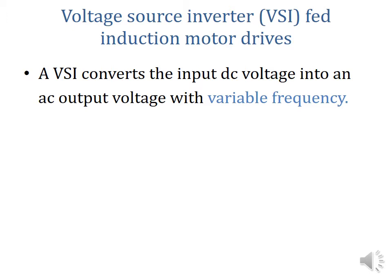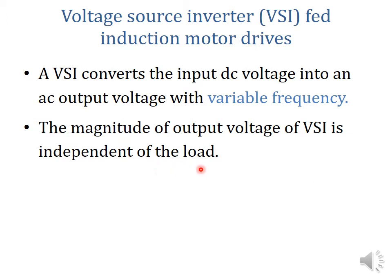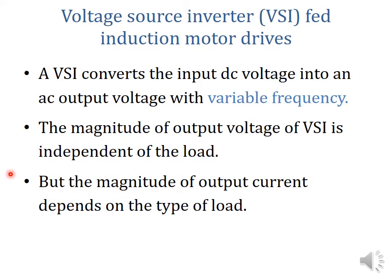A VSI, or voltage source inverter, converts the input DC voltage into an AC output voltage with variable frequency. That means the VSI provides a variable frequency output voltage that can be used to control the speed of an induction motor. The magnitude of the output voltage of the VSI is independent of load, while the magnitude of the output current depends on the type of load.